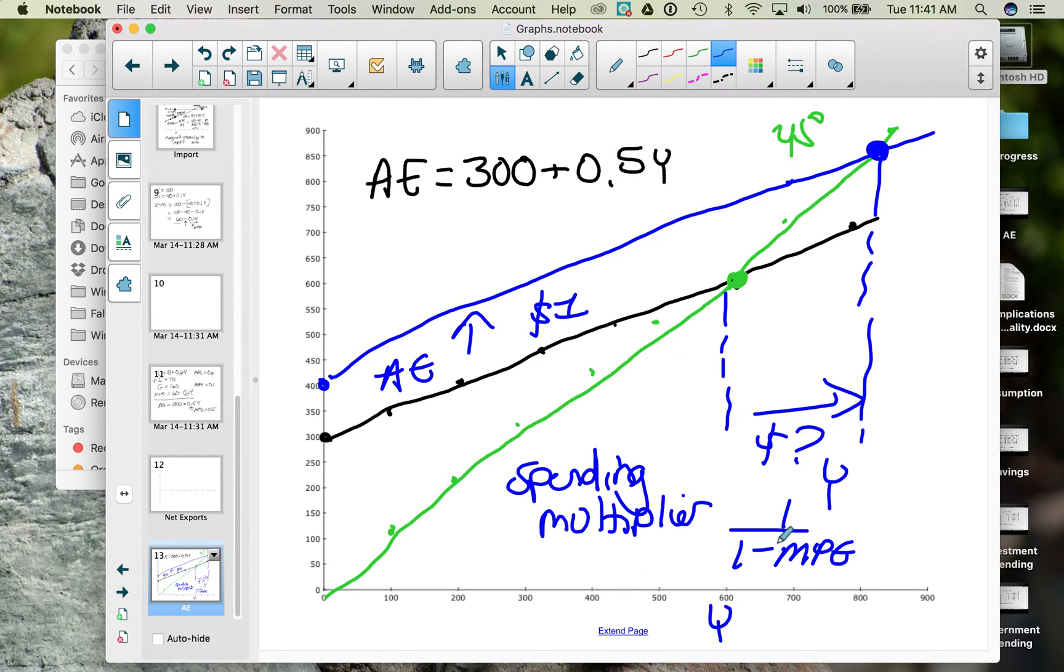MPE, the marginal propensity to expend, is 0.5. So MPE is the slope of your aggregate expenditure function.